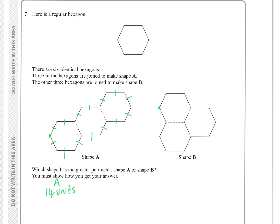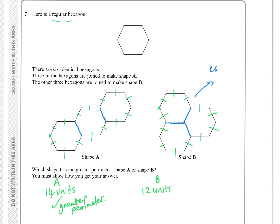For shape B, counting clockwise: 1, 2, 3, 4, 5, 6, 7, 8, 9, 10, 11, 12 units. Since it's regular, each unit length is the same, so shape A has the greater perimeter. Visually, shape A loses two lengths from the perimeter while shape B loses three, making shape B more compact.